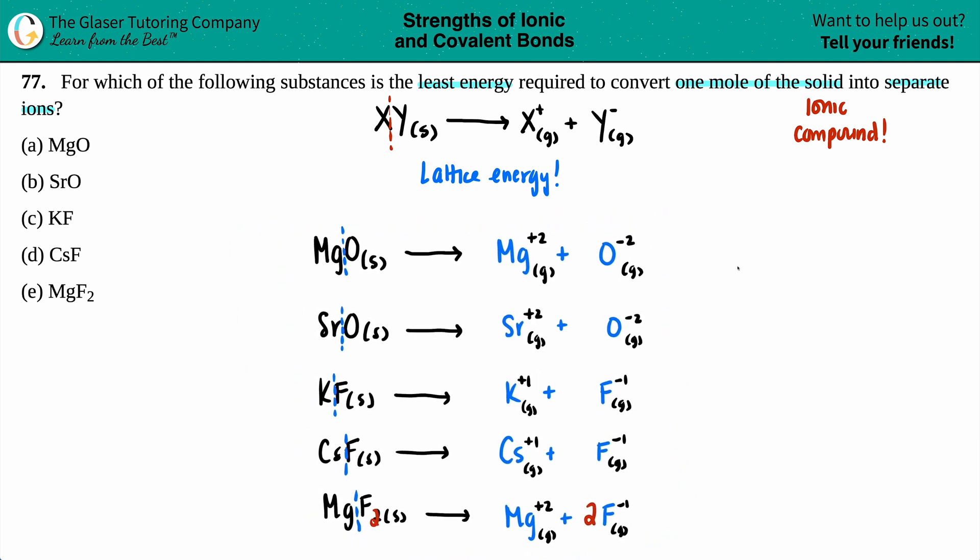Now let's talk about what will dictate a lattice energy to increase or decrease. When we're talking about energy, if you have high amounts of energy, that means there's quite a resistance. High amounts of energy means something is hard to do.